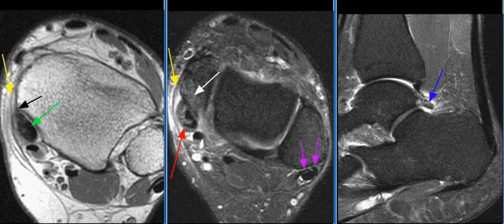MR findings are consistent with severe tendinosis of the tibialis posterior tendon with high-grade type 1 partial tear, and moderate peroneus brevis tendinosis with a longitudinal split.